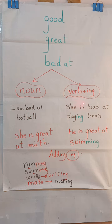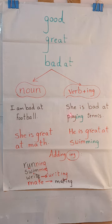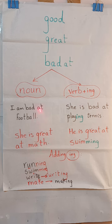Or you can add a verb plus -ing. For example: 'She is bad at playing tennis.' Here 'playing' is a verb plus -ing. Another example: 'She is great at math' — 'math' is a noun. And: 'He is great at swimming' — 'swimming' is a verb plus -ing.